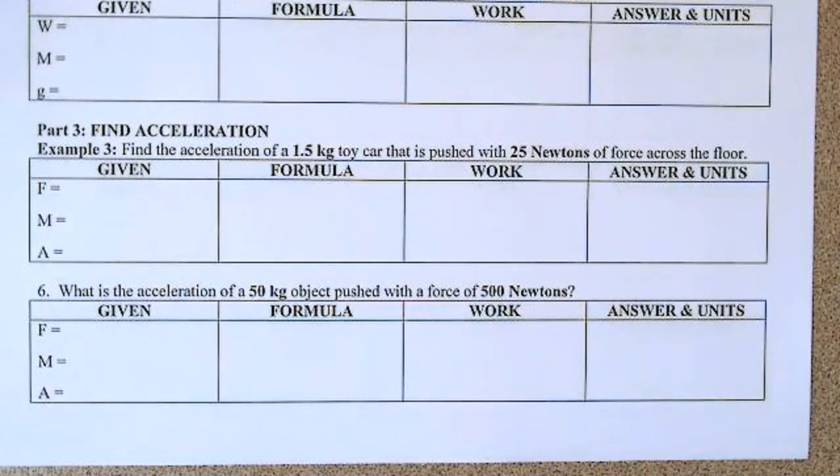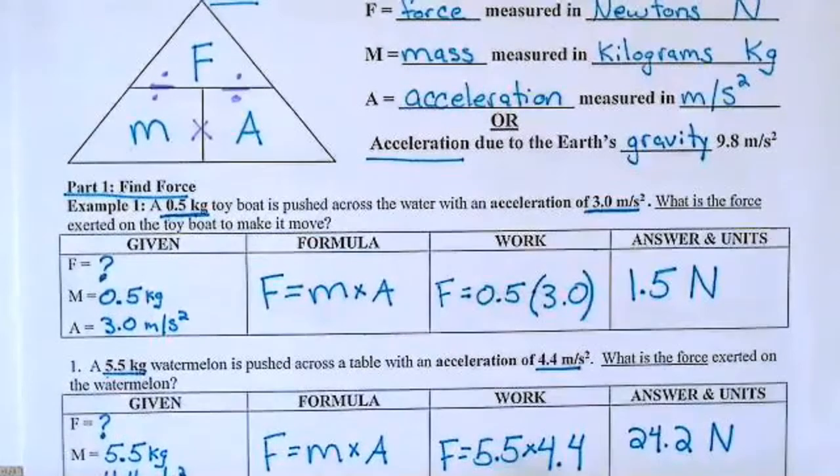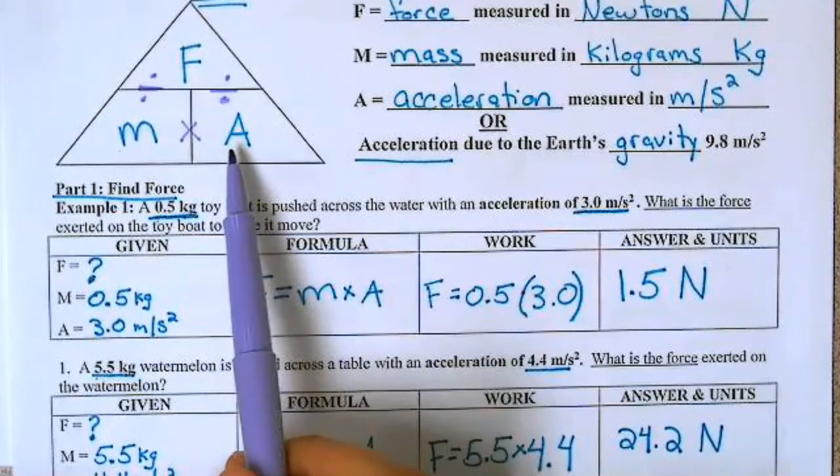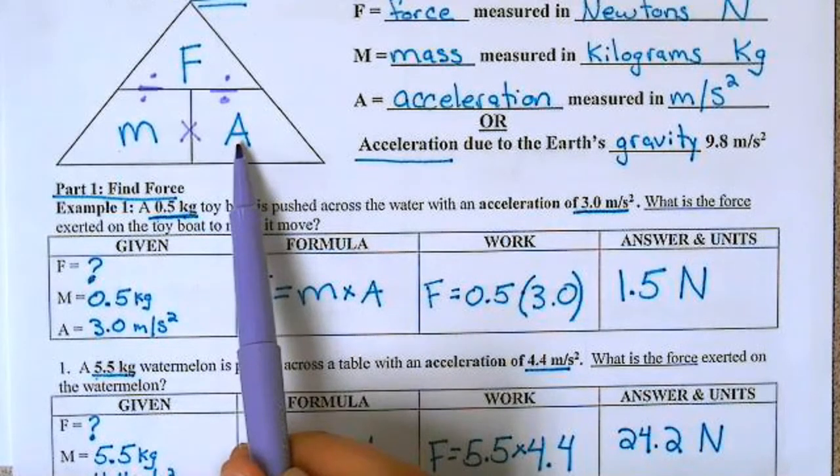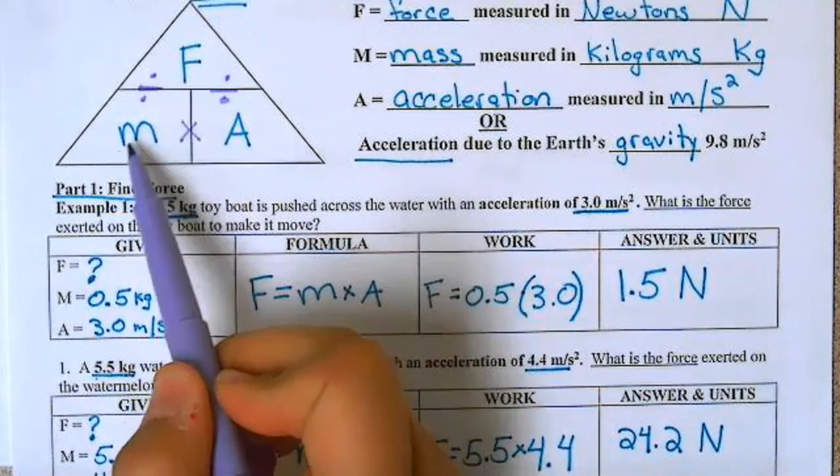For part three, we're finding acceleration. So if we go back to our math triangle, we see that acceleration is here. If we're looking for acceleration, we're going to do force divided by mass.